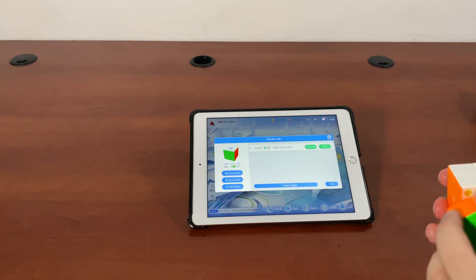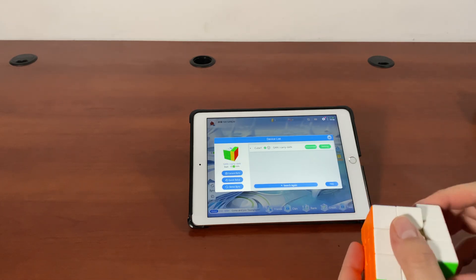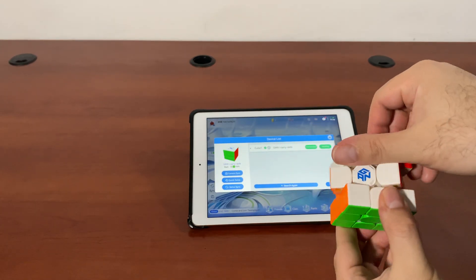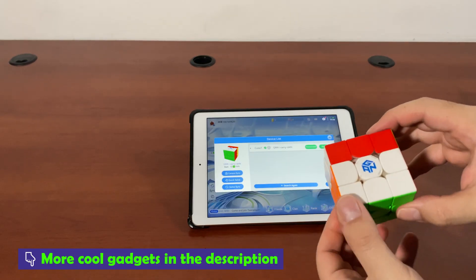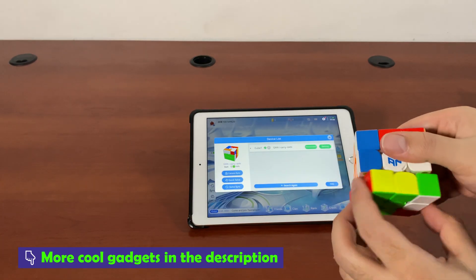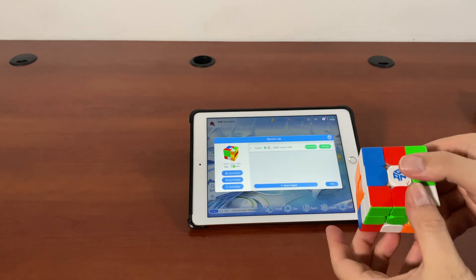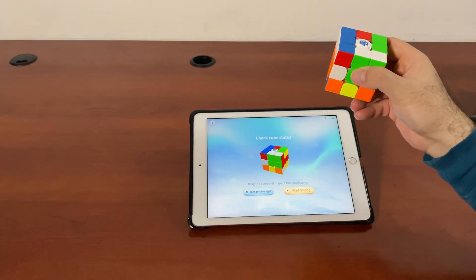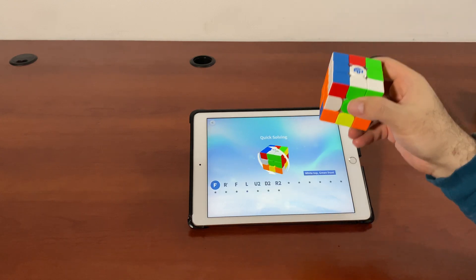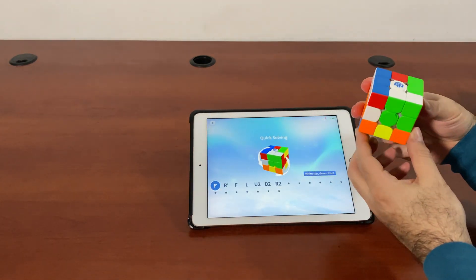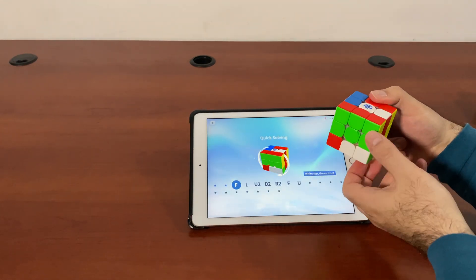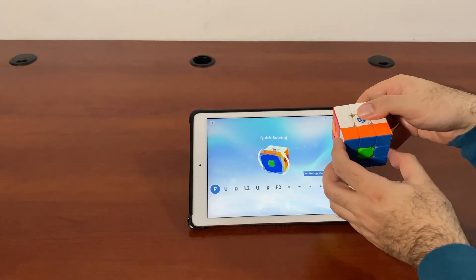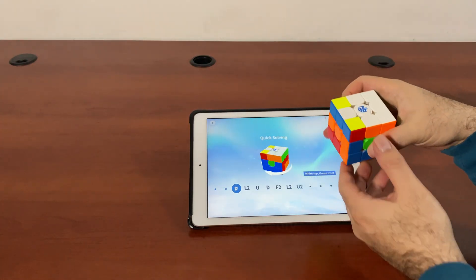So let's say I want to do something like this. I'm just scrambling it and then I go here and say quick solve. Start solving, it's gonna tell me what to do. Okay, make a mistake, I get feedback there.